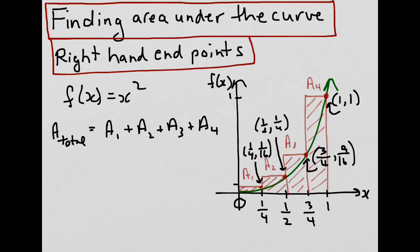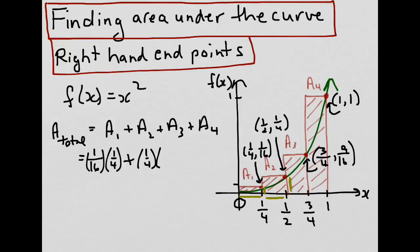Now we can go ahead and figure out the areas of each of the four rectangles. The area for the first rectangle would be height times width — the height being one sixteenth and the width being one quarter. For rectangle 2, the area would be one quarter times one quarter.